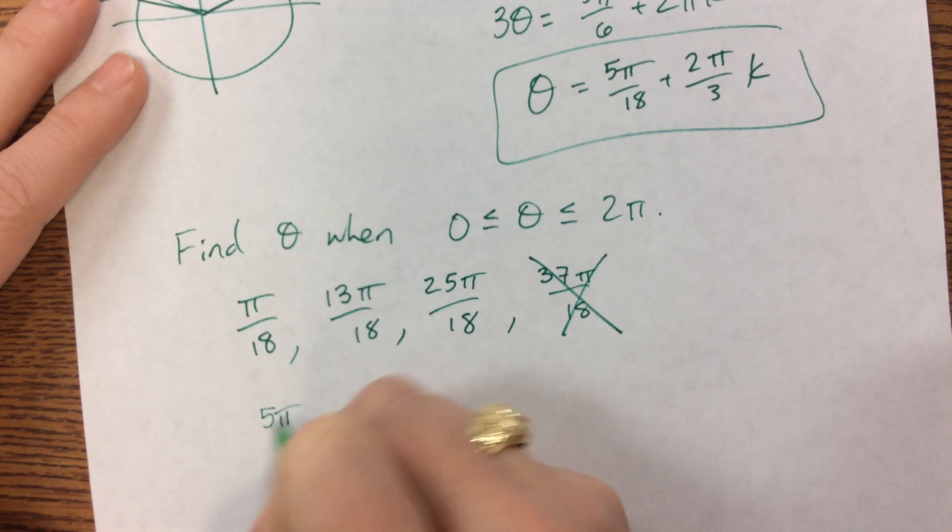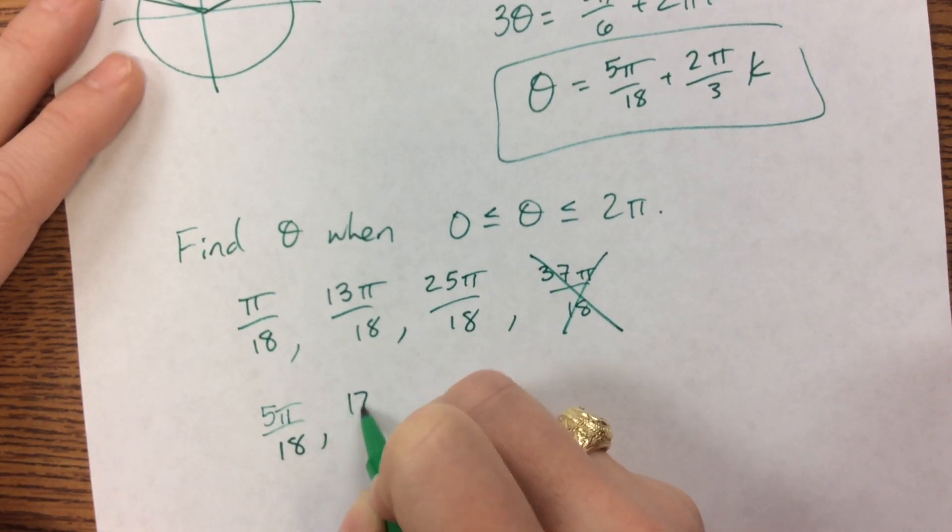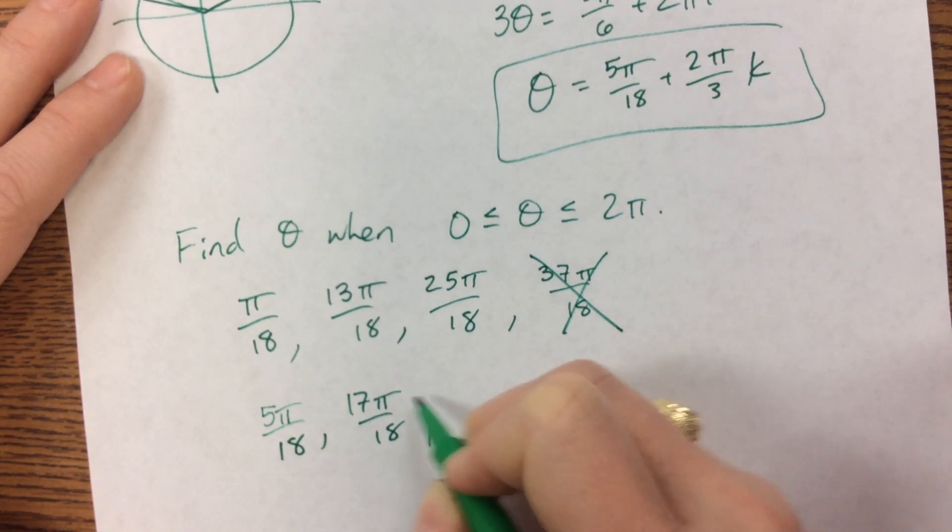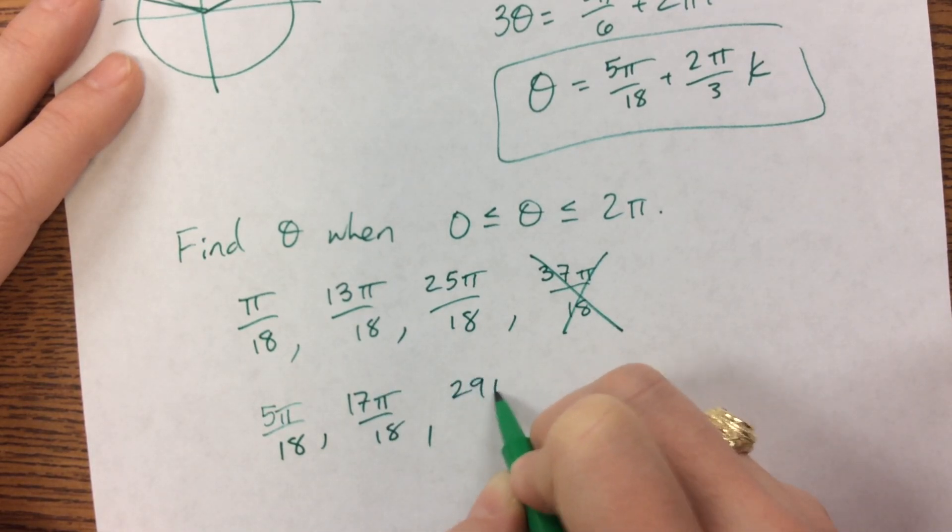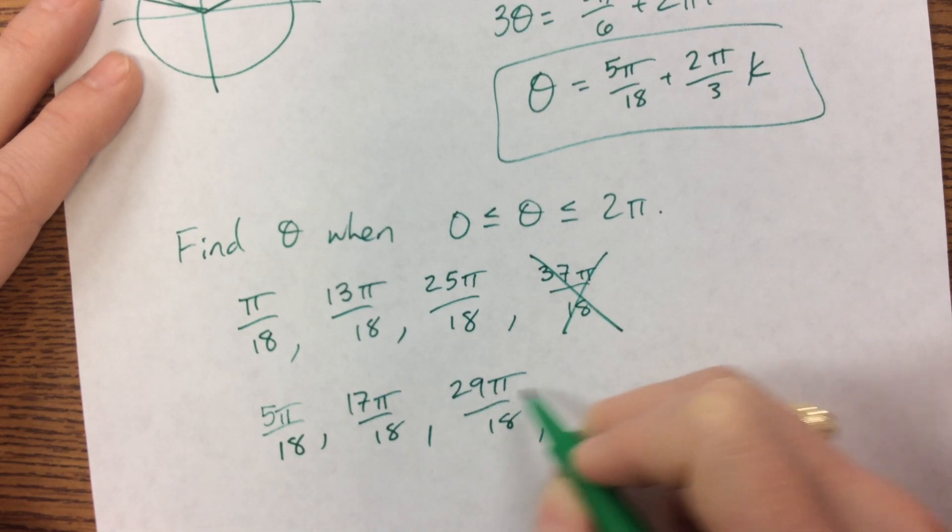And then we also have this family of answers. 5 pi over 18. I add 12 to that. I add 12 to that. When I add 12 again, I'm at... What is that? 41?